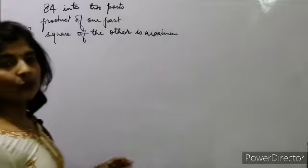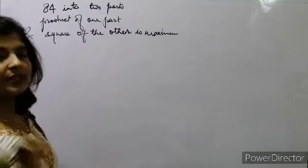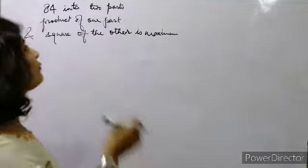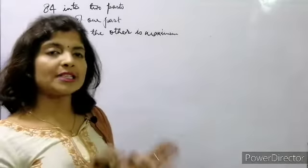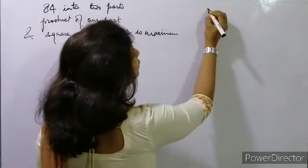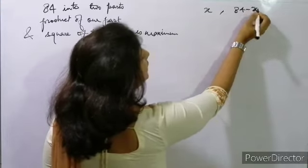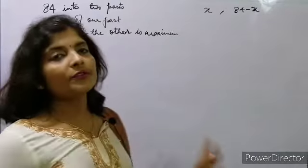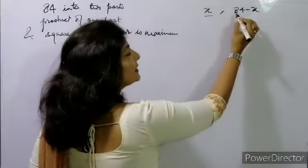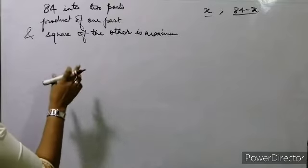We have another type of question: divide the number 84 into 2 parts such that... 84 is given. We take one part as x, so the second part will be 84 - x. When we add these two parts we get 84.